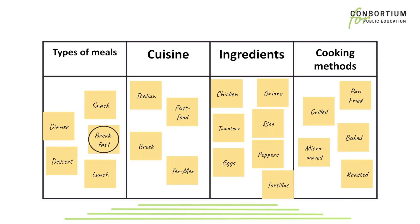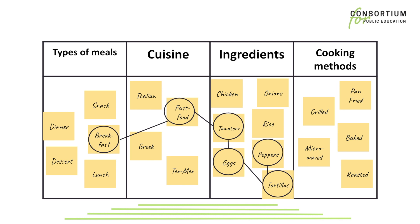Now let's connect ideas to create something new. I'm going to connect breakfast with a fast food cuisine, then add my ingredients: tomatoes, eggs, tortillas, peppers, and onions. And finally, I'm going to choose a cooking method — pan fried. Now I can go back and make other connections to come up with new food combinations in addition to this first one. From here, I take these combinations and come up with something new to eat.